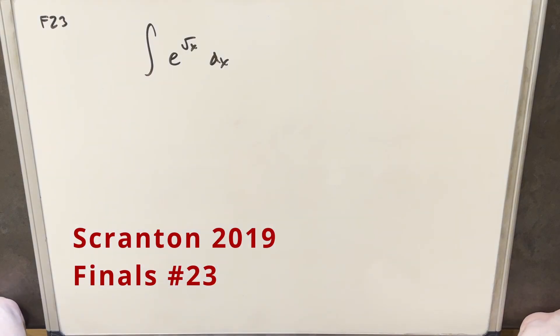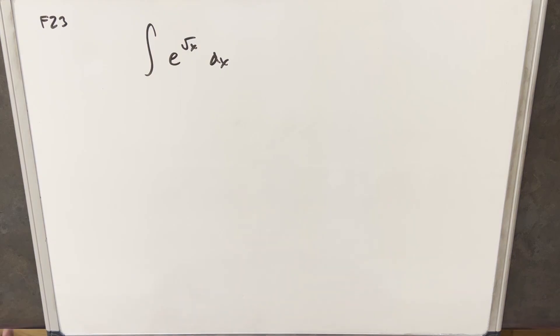Hey, we have another integral here from the Scranton Integration B 2019. This is what it's final is problem number 23. We have the integral of e to the square root of x dx. Okay, we have a pretty standard looking kind of common integral here, and let's just go through it.